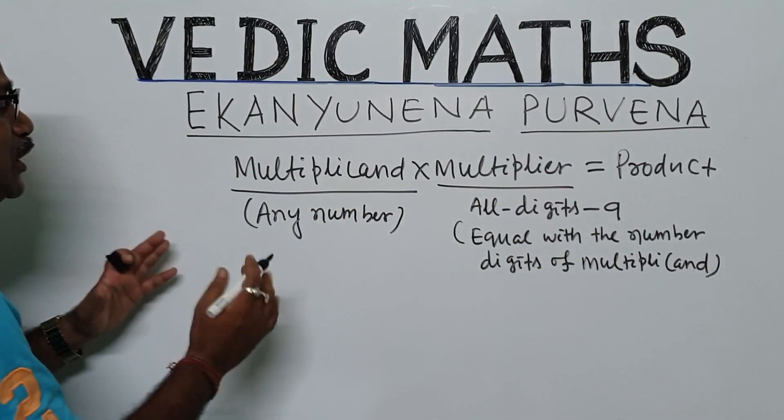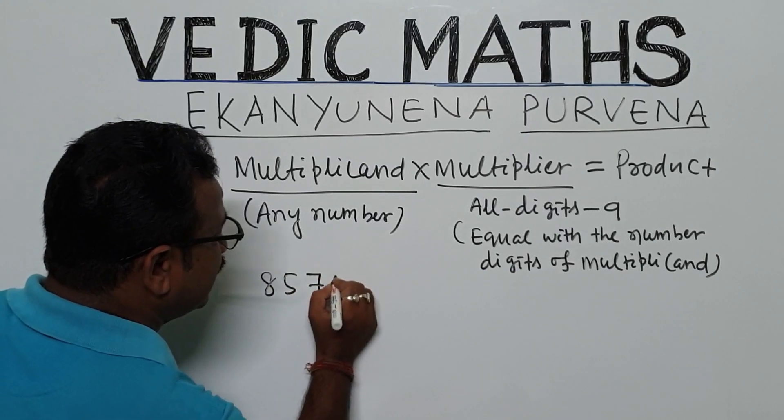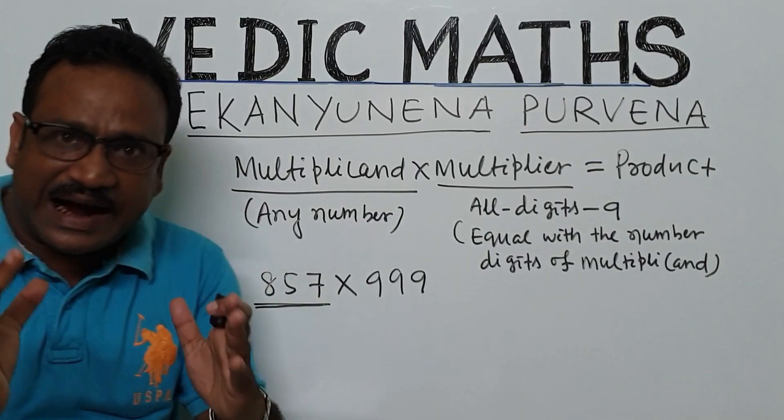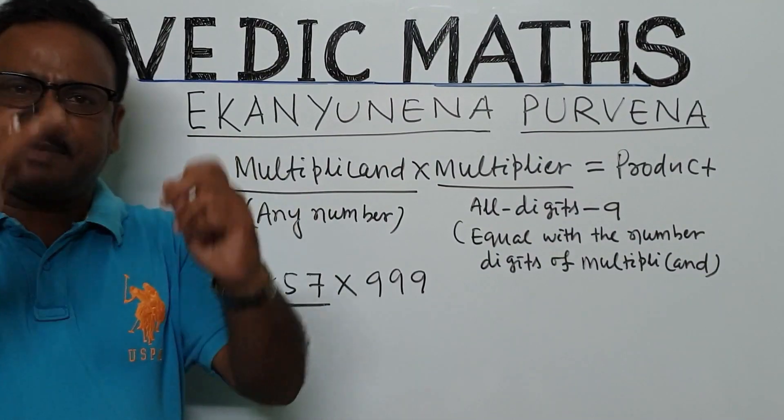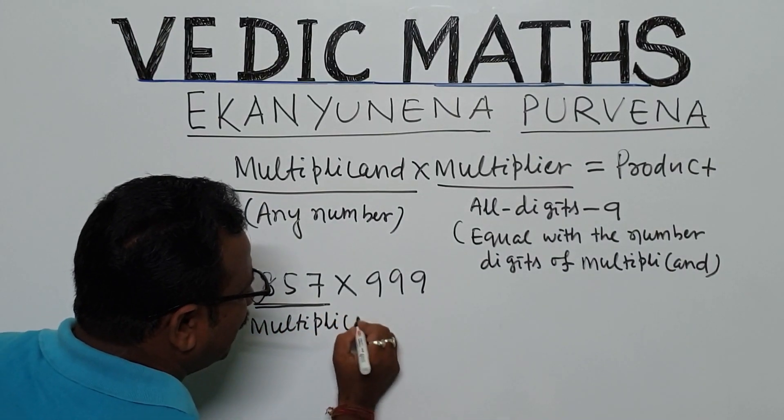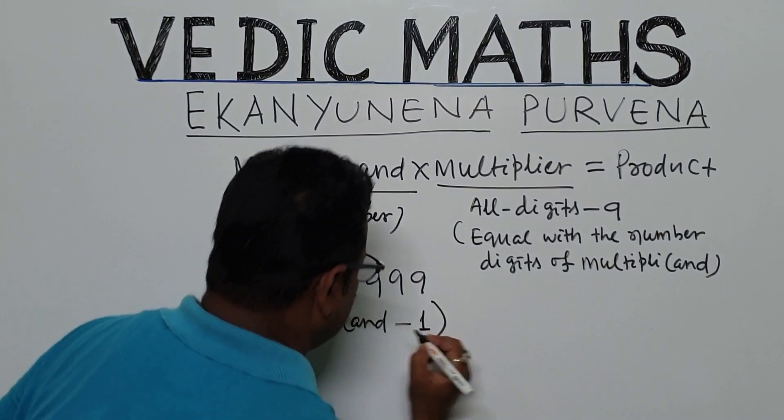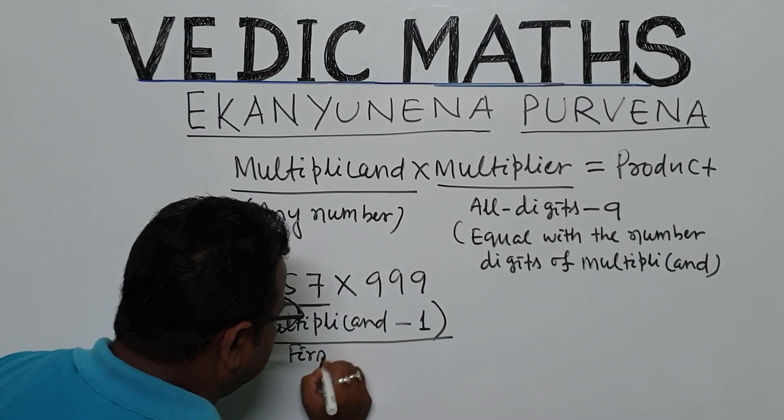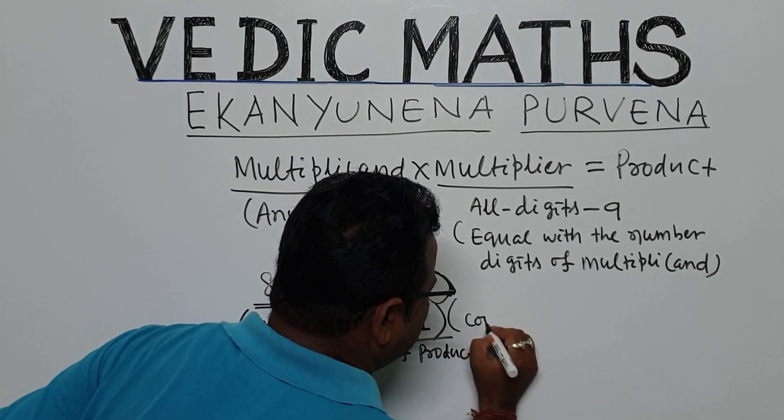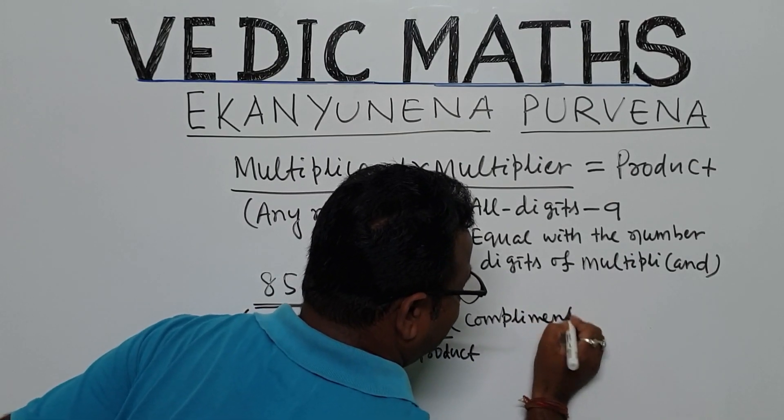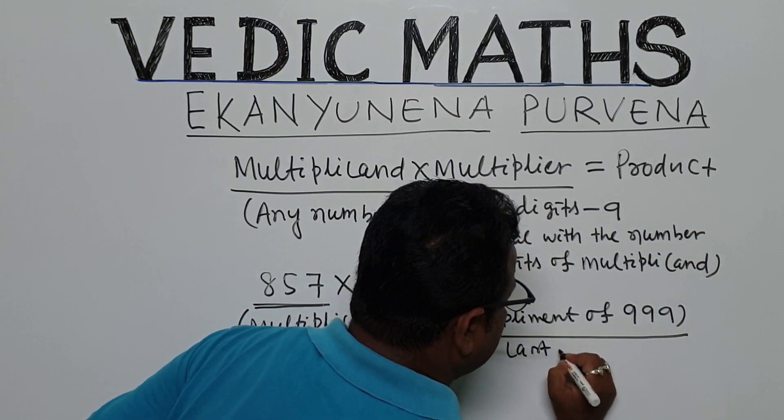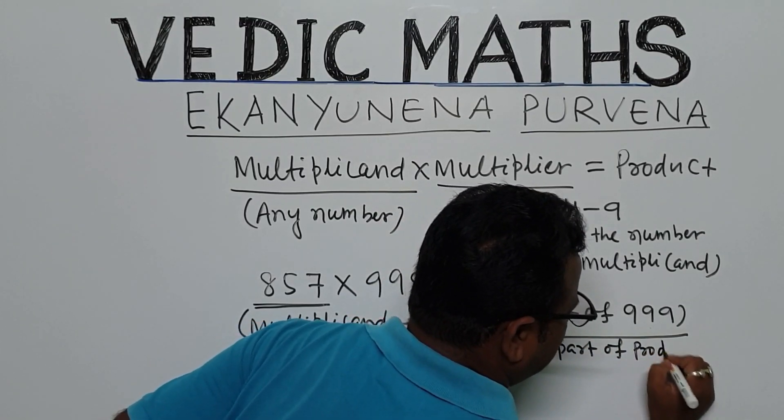Suppose given 857 into 999. This number is the multiplicand and 999 is the multiplier. What we will do? The multiplicand minus 1 is the first part, first part of product. And complement of 999, this is the last part of product, last part of product.